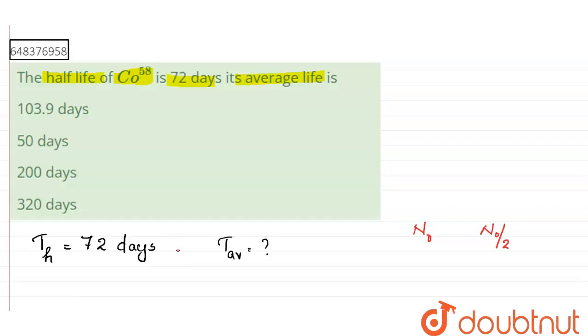Now, what is the average lifetime of a radioactive substance? Suppose there are N0 number of atoms in the beginning. Some of the atoms will disintegrate first and some other will disintegrate later. So, the mean life of a radioactive element is equal to the sum of the lifetimes of all atoms divided by the total number of atoms.